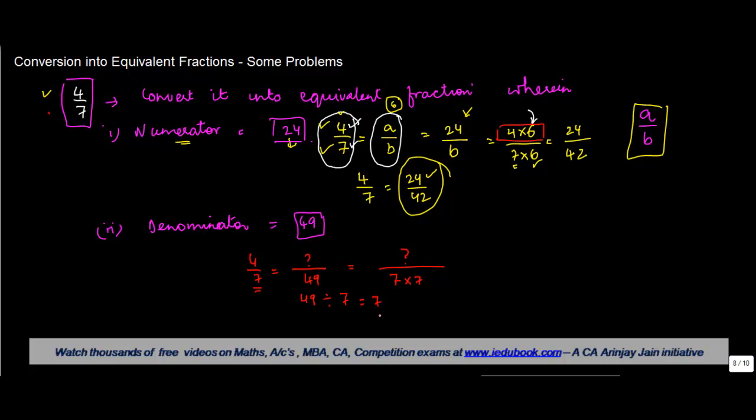Now we know that if 4/7 is equal to this fraction which has a denominator of 7 and which is multiplied by 7 here, then even the numerator has to be multiplied by the same number. So I write here 4 into 7, or 28 by 49.